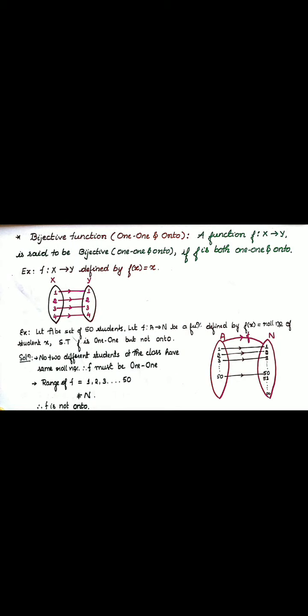So in your domain x has four elements, that is one, two, three, four. And in your codomain we have four elements, one, two, three, and four. Image of one is one, image of two is two, image of three is three, and image of four is four. All the elements which are present in domain have one and only one image in your codomain. Your one-one function is true here.